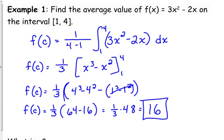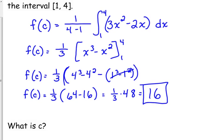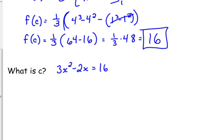Well, that is the average y value. f(c) is 16. So, you set your function equal to that value. 3x² minus 2x is equal to 16. And, you're solving for the x. C is an x value. C is the x value where the average value occurs.